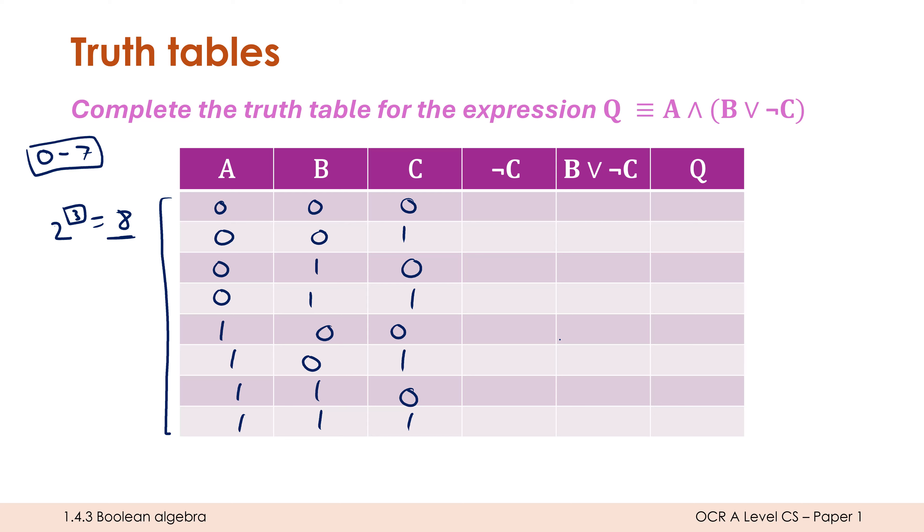Once you have the input sorted, you can start working on the actual outputs. So these two columns are not the outputs, but they're there to help you build up your solution bit by bit. So not C is quite easy. I can just reverse the C column. So 0 becomes 1, 1 becomes 0. And then the next column chosen for me to use is B or not C. I'm using OR between B and not C. I'm looking for there to be a one in either of these columns. If there's a one in either or both, it's going to be a one. Otherwise, it's going to be a zero.